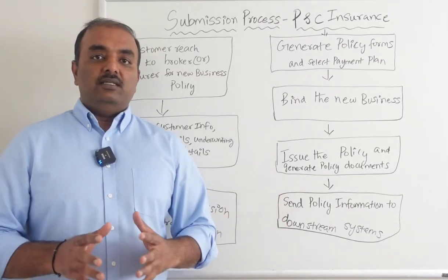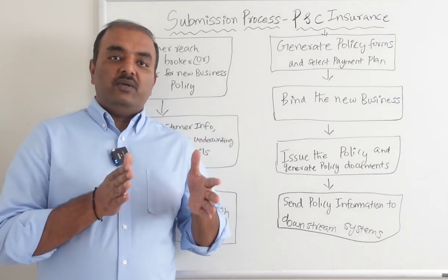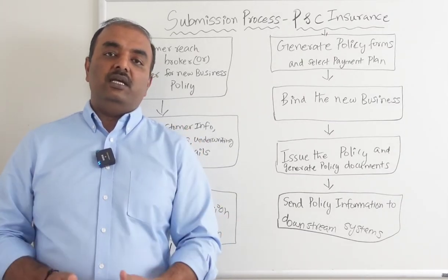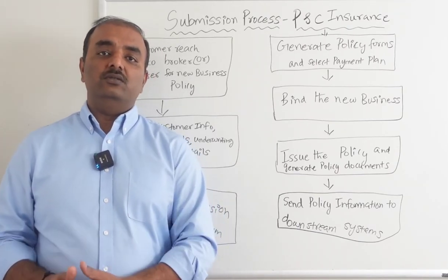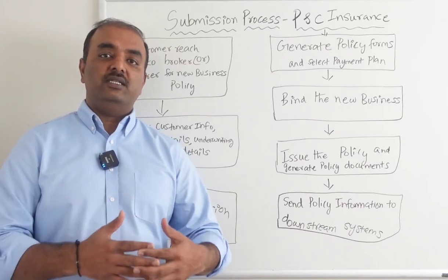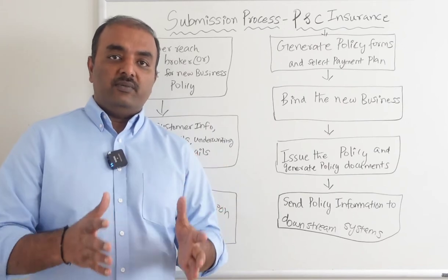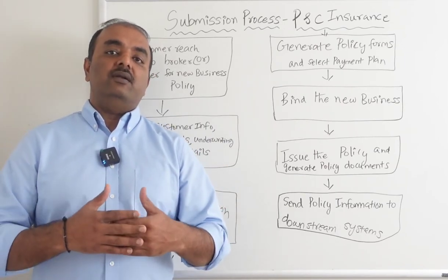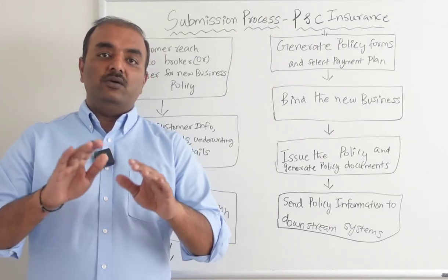Once this is done, an important step in the submission process is that all this information has to be sent to the downstream systems. For example, if you issue a policy, billing information has to be sent to the billing system, accounting information has to be sent to the general ledger, and documentation information has to be sent to the document management system. We have to make sure all policy information is passed along to all downstream systems.